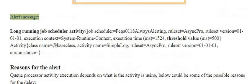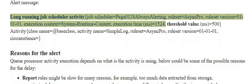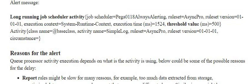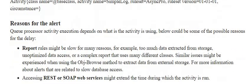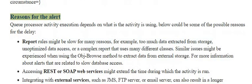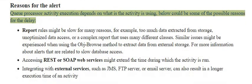Alert message: long running job scheduler activity. Reasons for the alert: queue processor activity execution depends on what the activity is using. Below are some of the possible reasons for the delay.